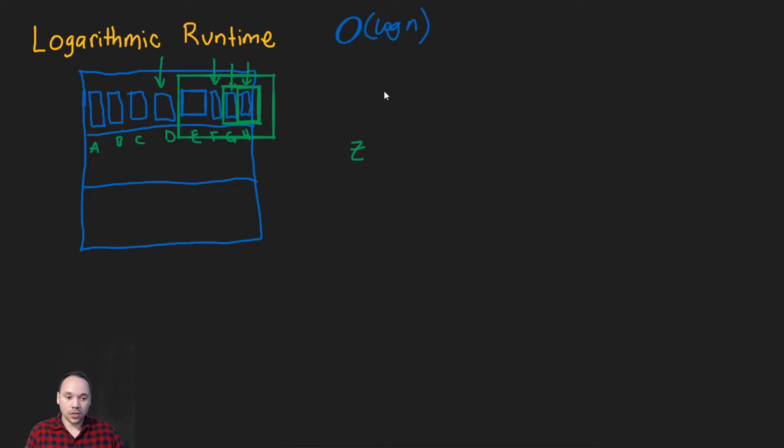But let's see how it looks like in code. So this is called a binary search. And we're going to implement it.